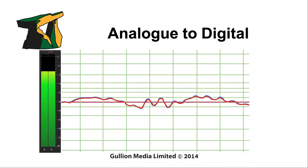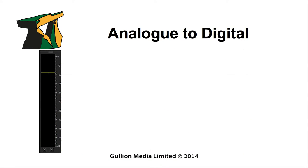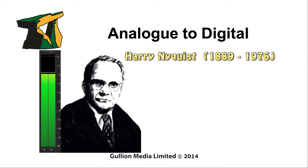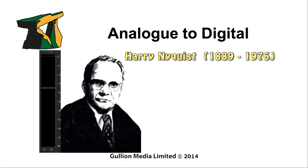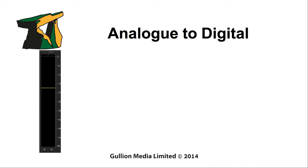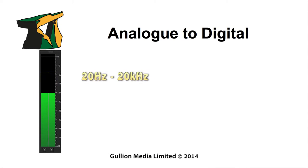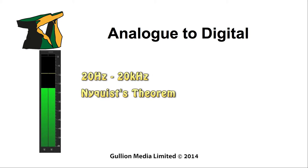But how many times should the sound wave be sampled each second? Harry Nyquist came up with a theorem that sound should be sampled at twice the rate of the highest frequency. As mentioned before, the human ear has a range of 20 Hz to 20 kHz. Therefore, using Nyquist's theorem, the rate should be 40,000 samples per second.